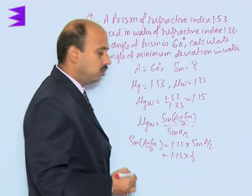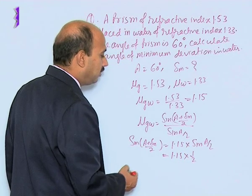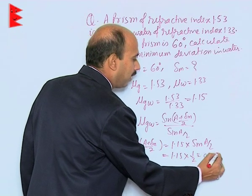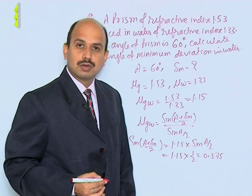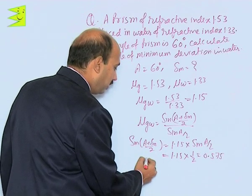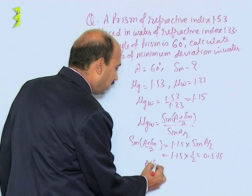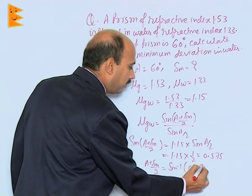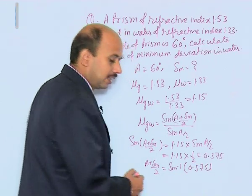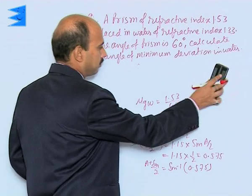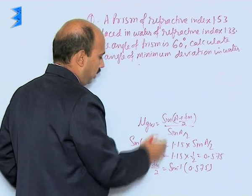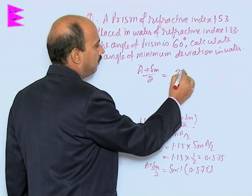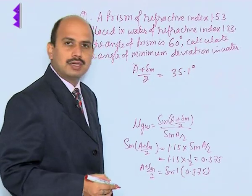So sin(A/2) = 1/2, and 1.15 × (1/2) = 0.575. Therefore, (A + delta_m) / 2 = sin⁻¹(0.575), which gives 35.1 degrees, as seen from the trigonometric table.